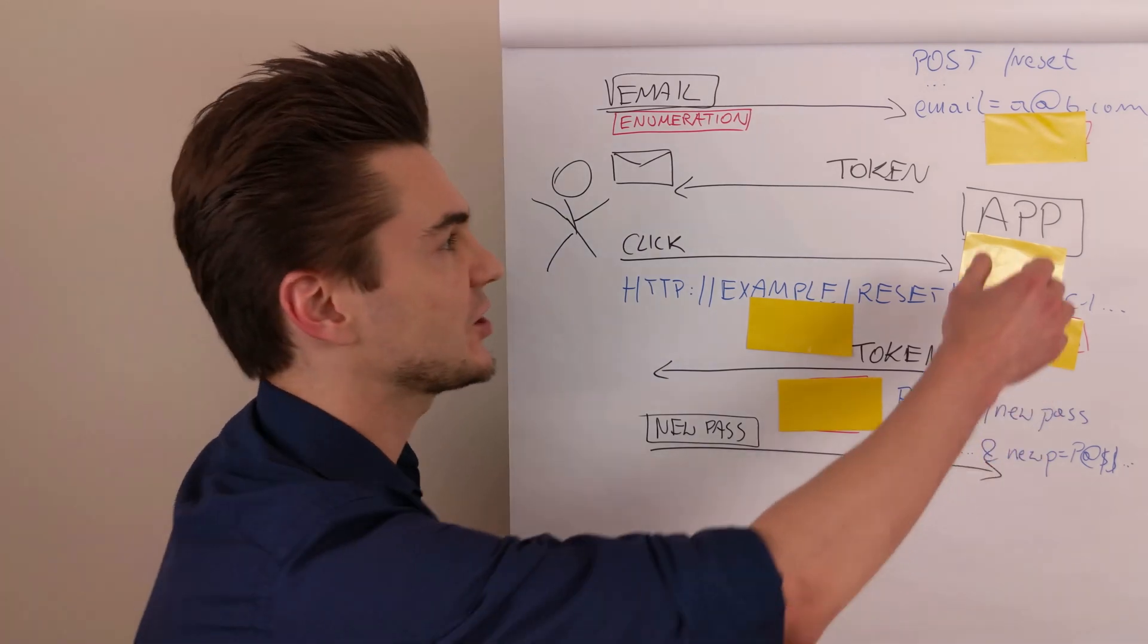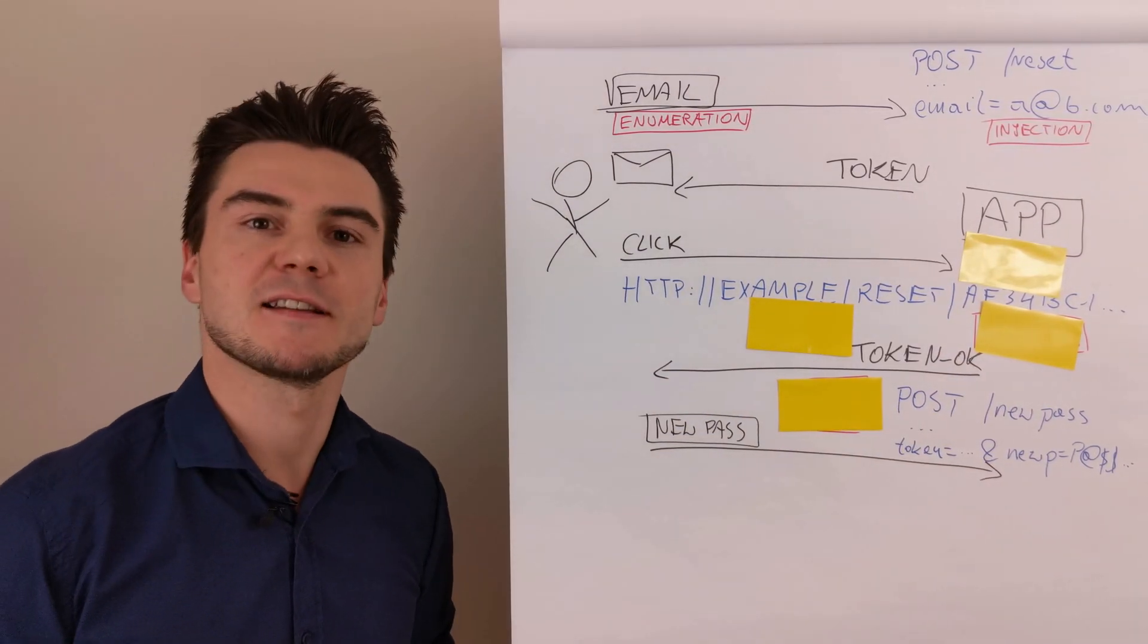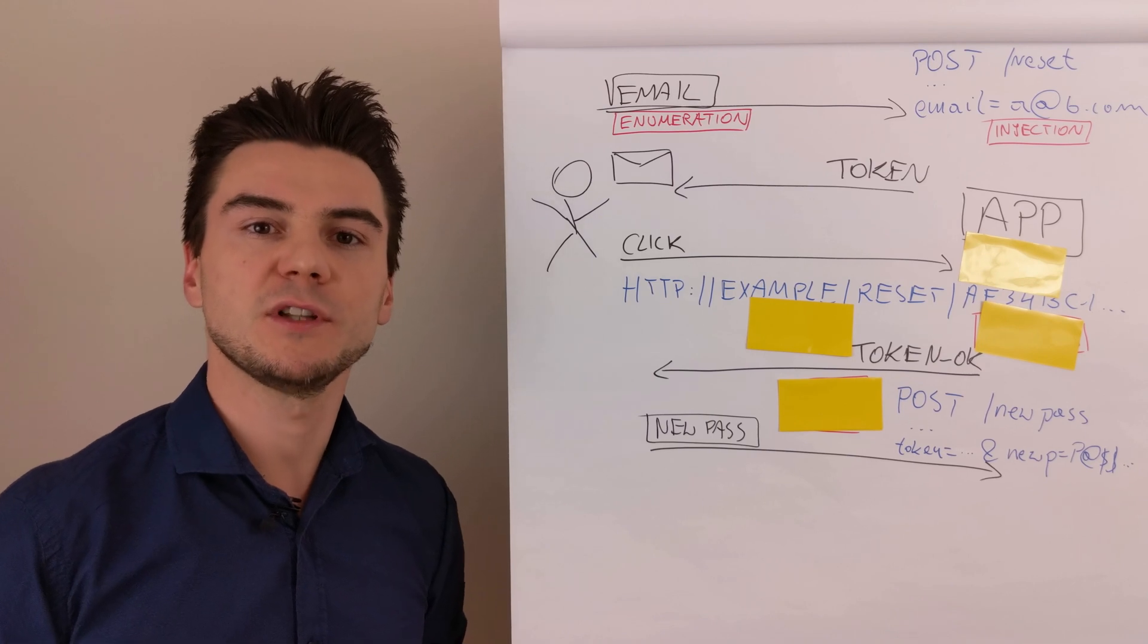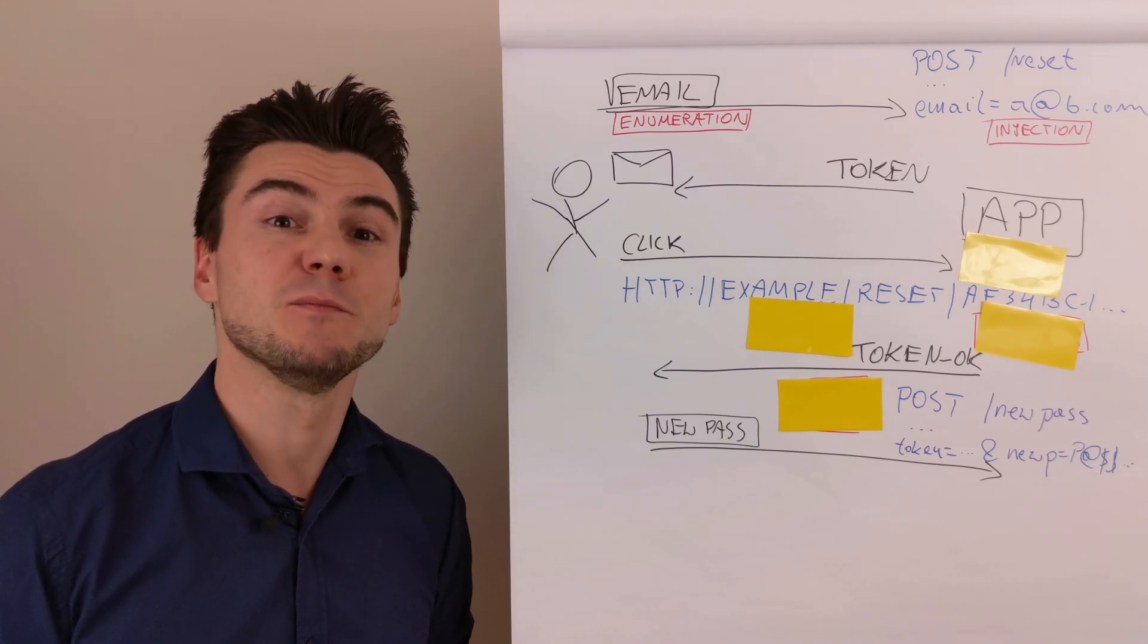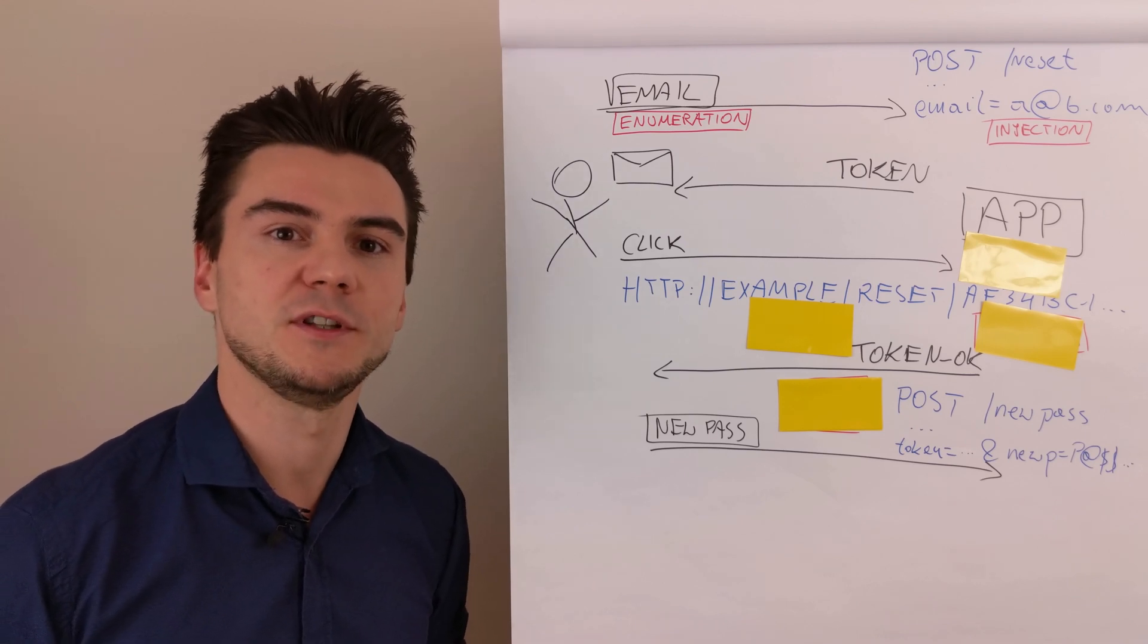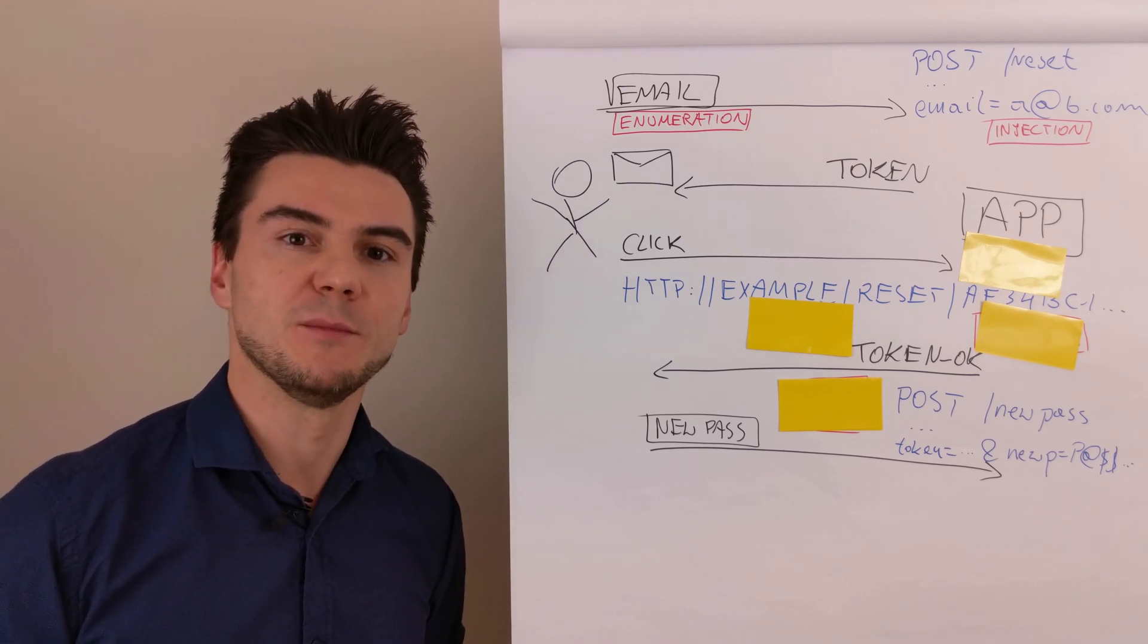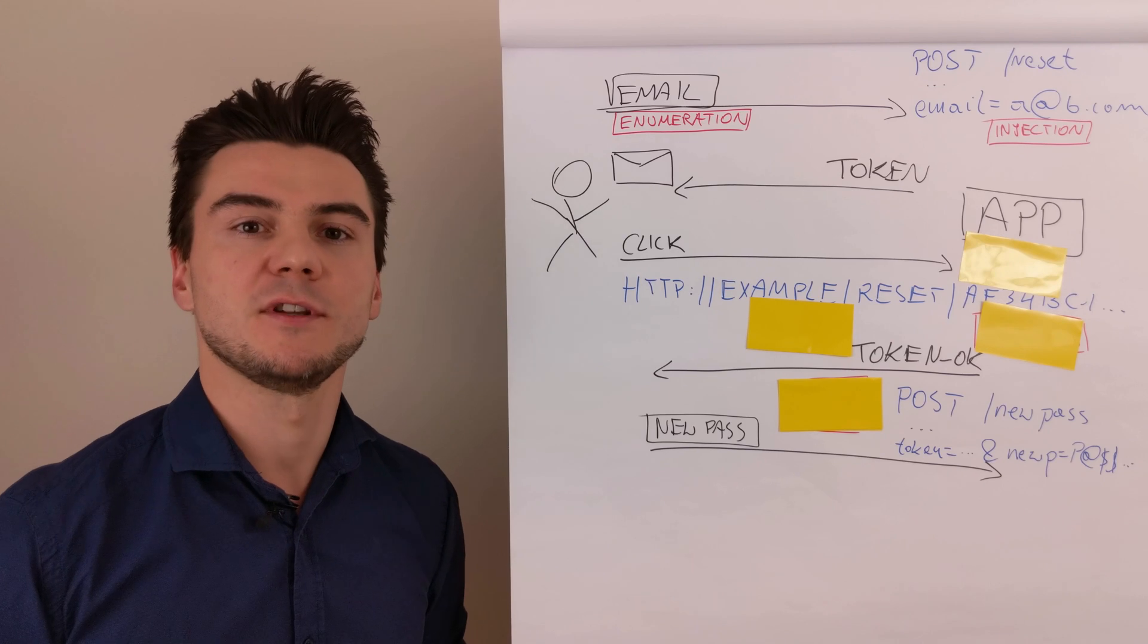The second payload would be an injection. Injecting some malicious input to the email address such as SMTP header injection may result in sending a copy of the reset password email with the token to the attacker's mailbox.